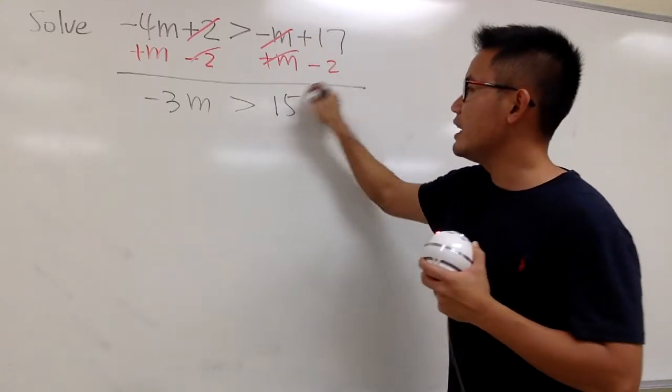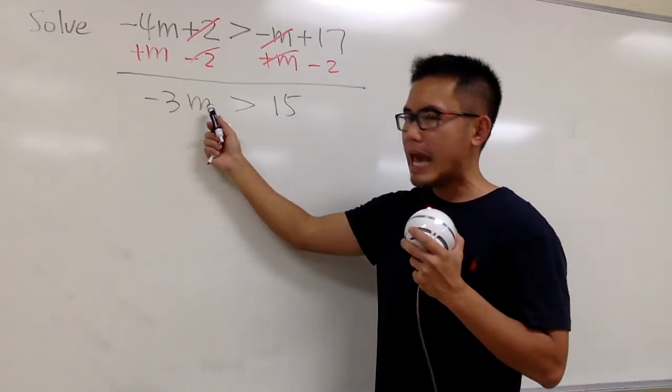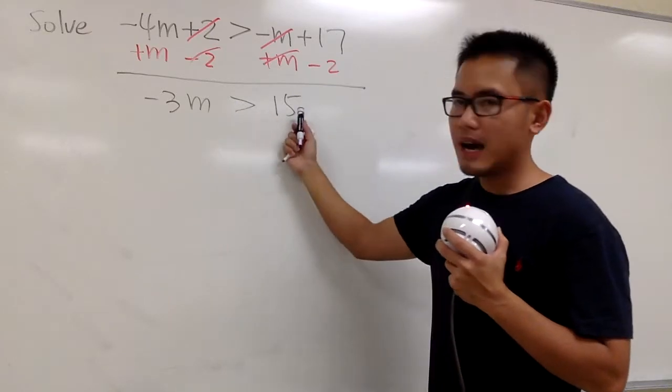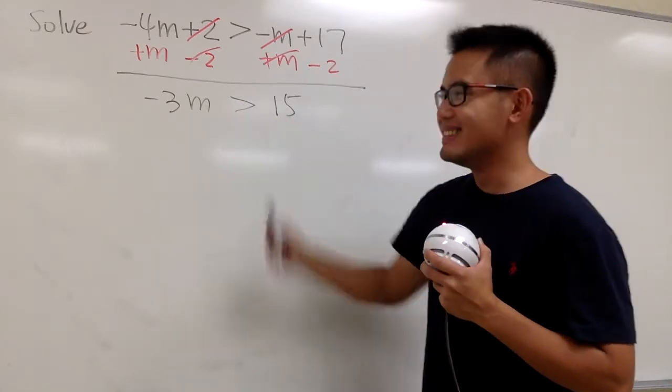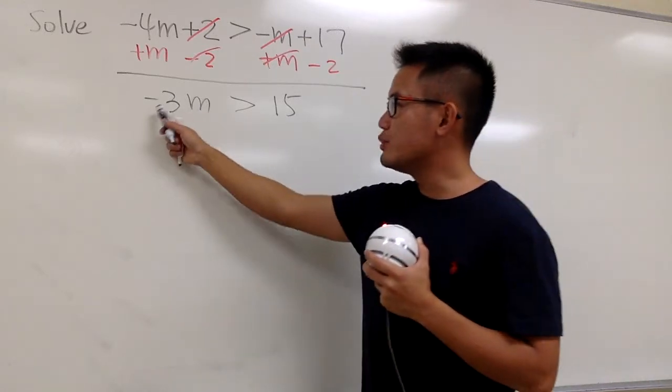And we see that this is negative 3 times m, it's greater than 5, I mean 15. How can we get the m by itself? This is negative 3 times m, right?